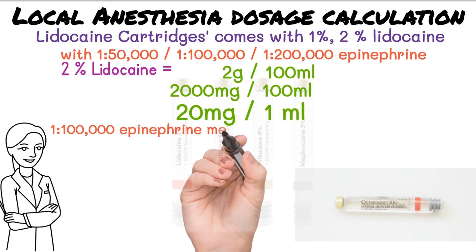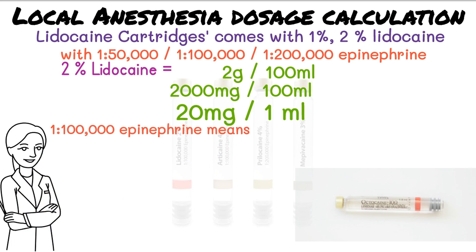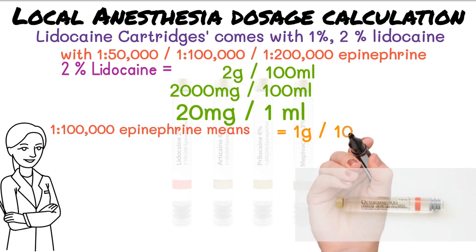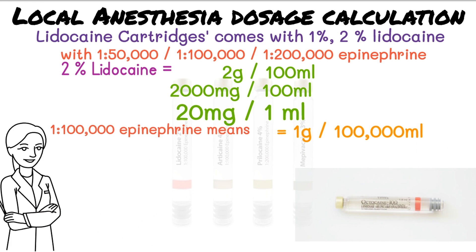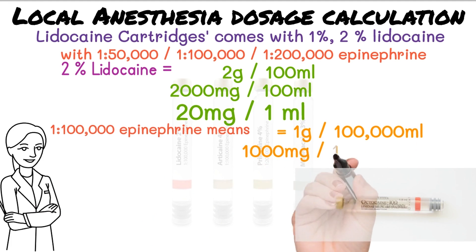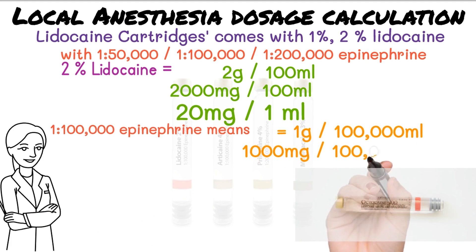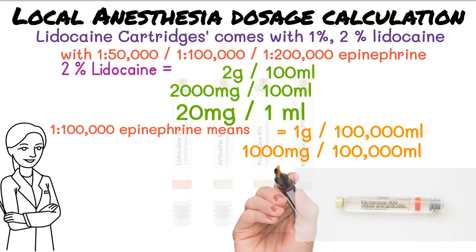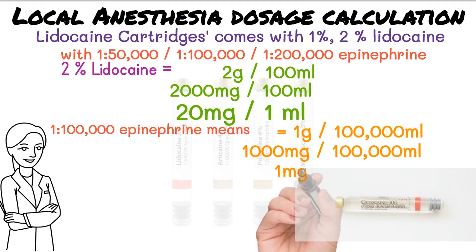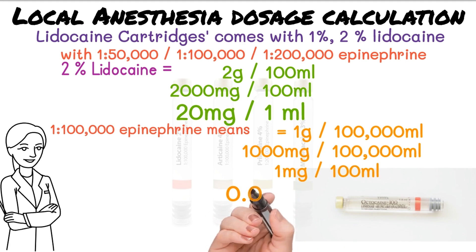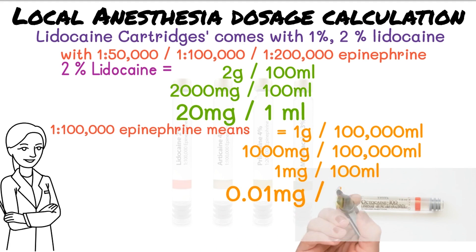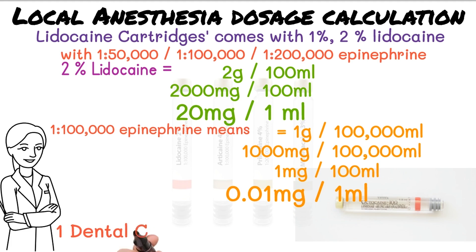The most commonly used local anesthesia with vasoconstrictor has 1:100,000 epinephrine, which means one gram of epinephrine in 100,000 milliliters of solution, or 1000 milligrams per 100,000 milliliters — equal to 0.01 milligrams per one milliliter of local anesthesia solution.